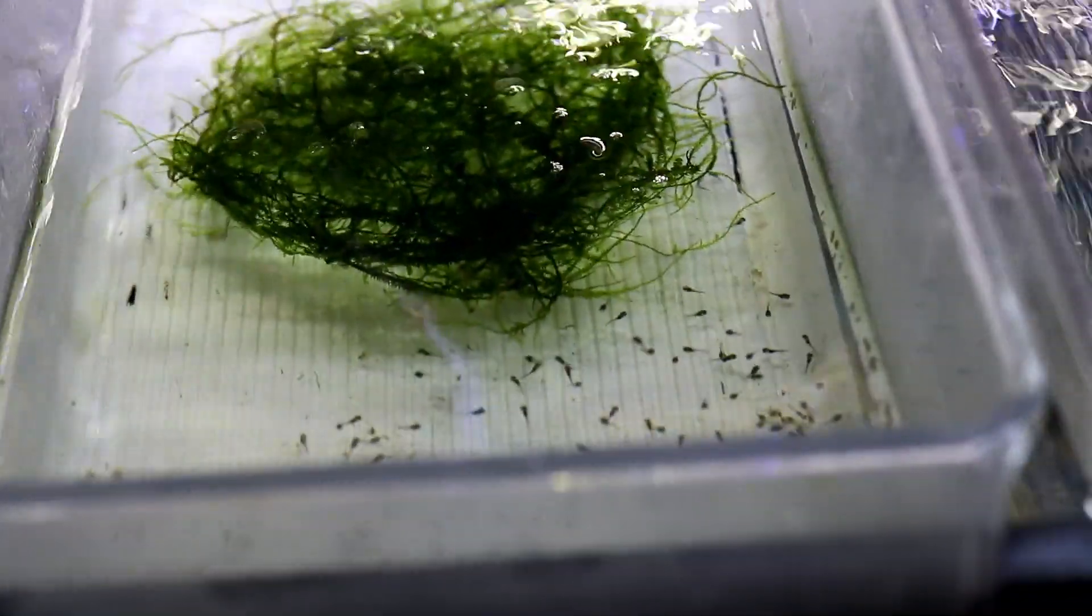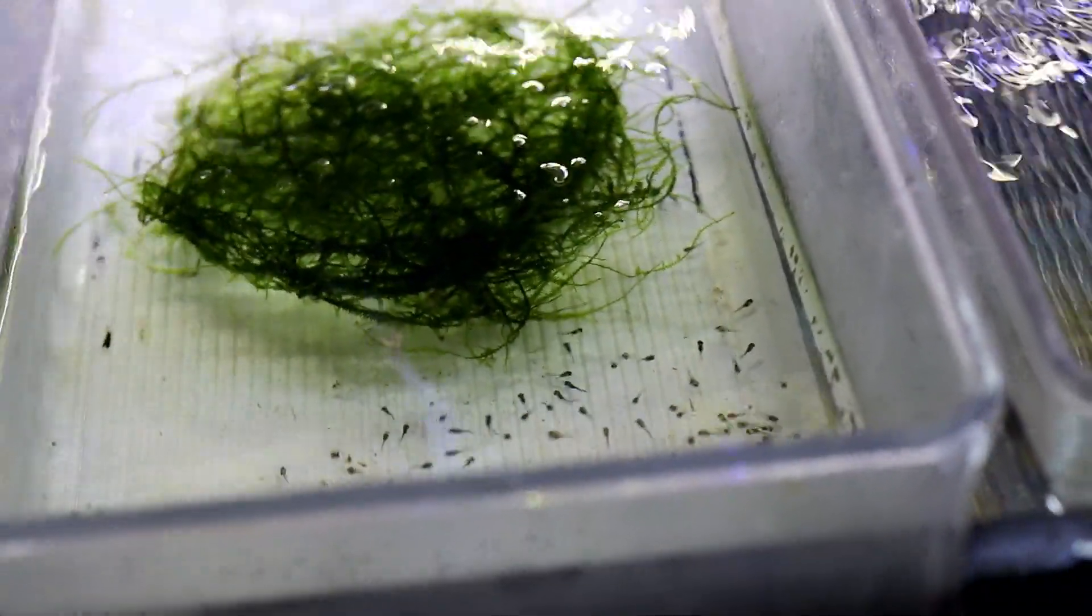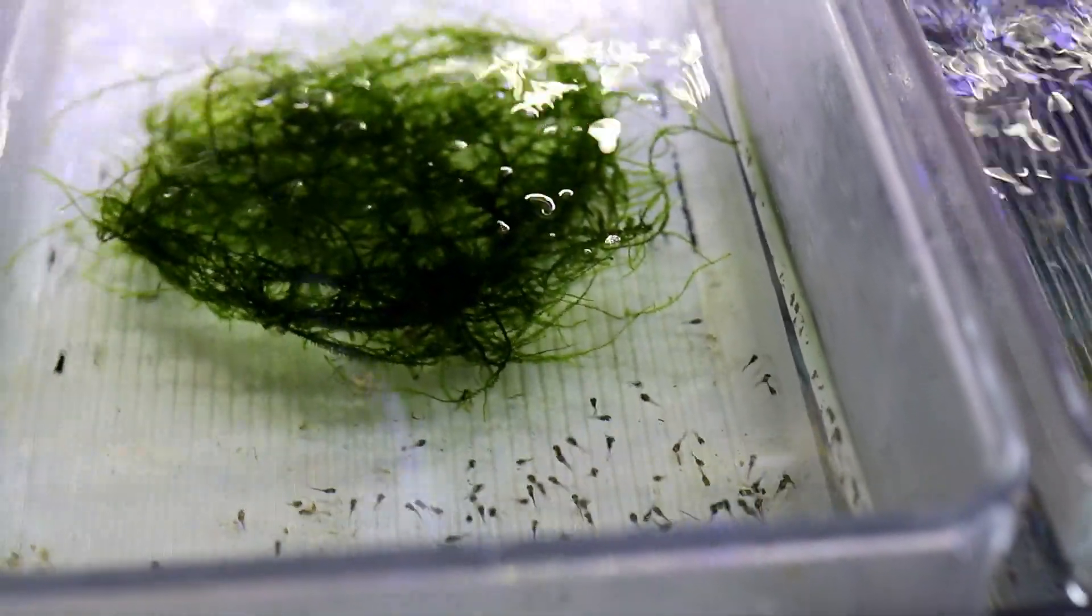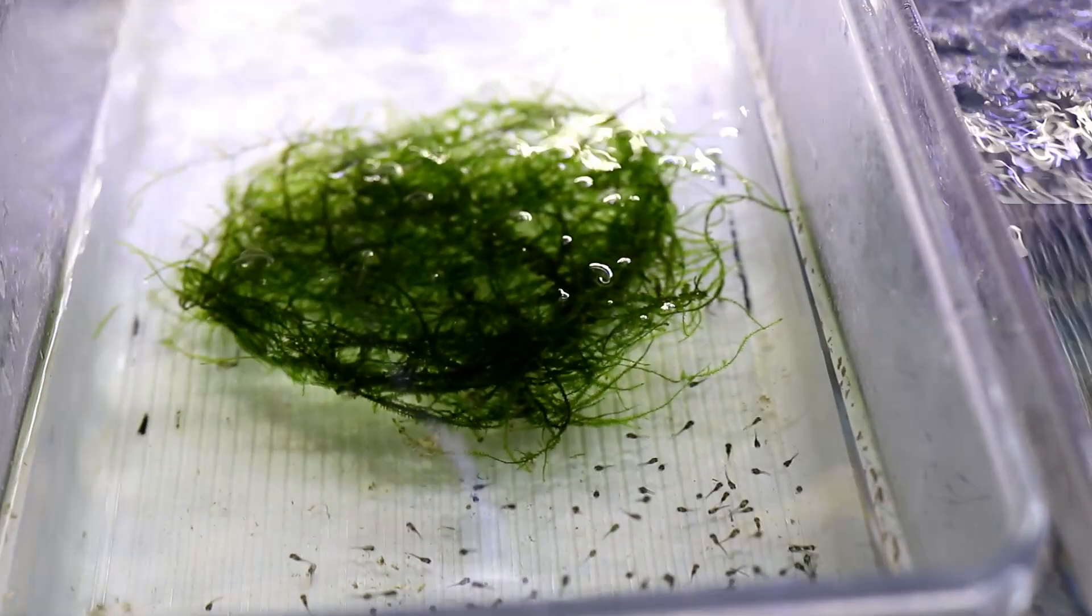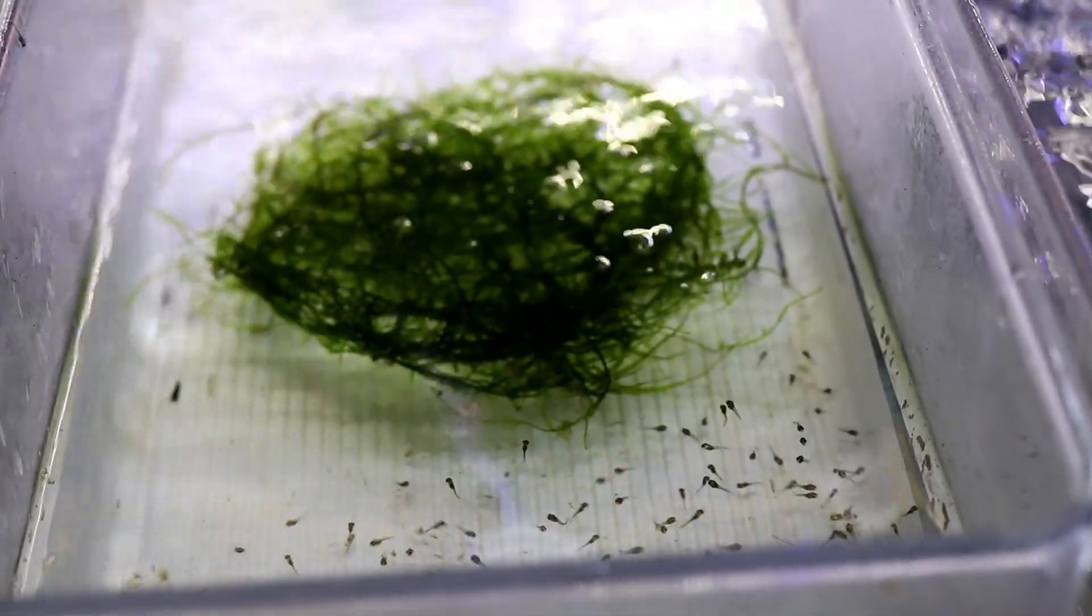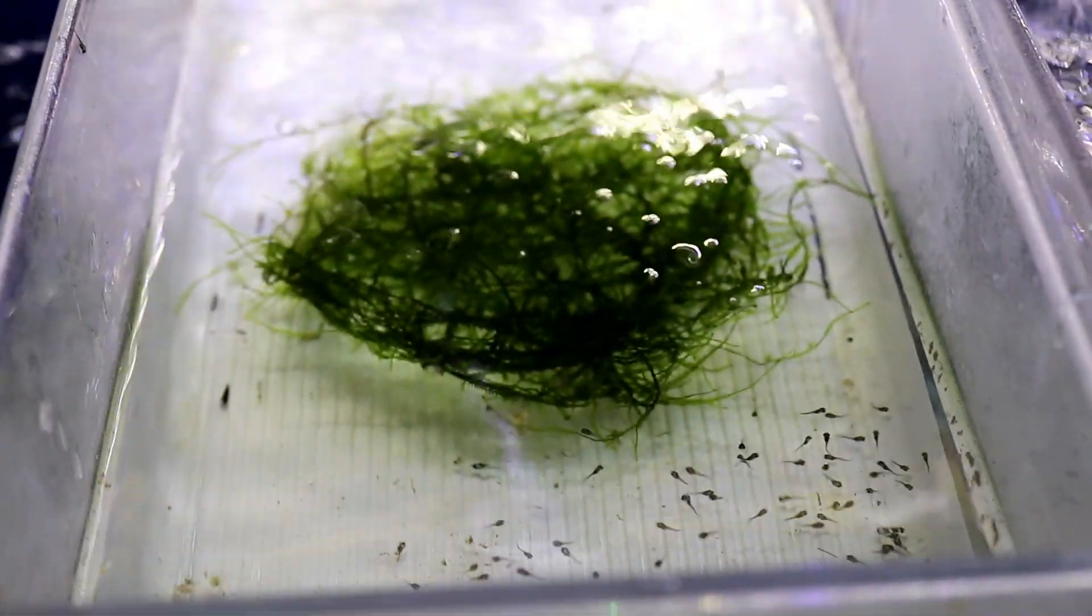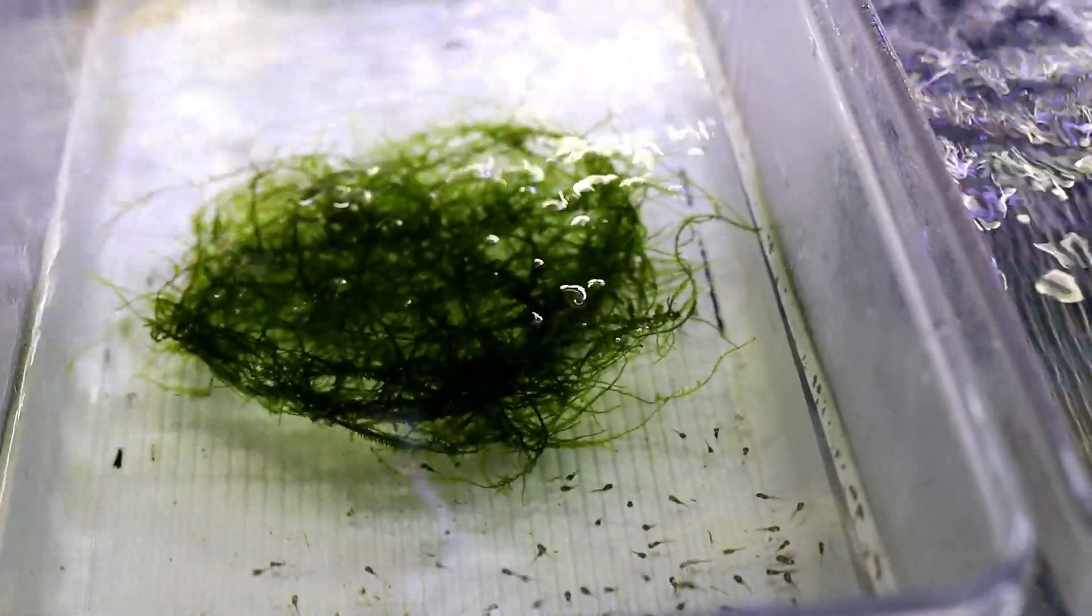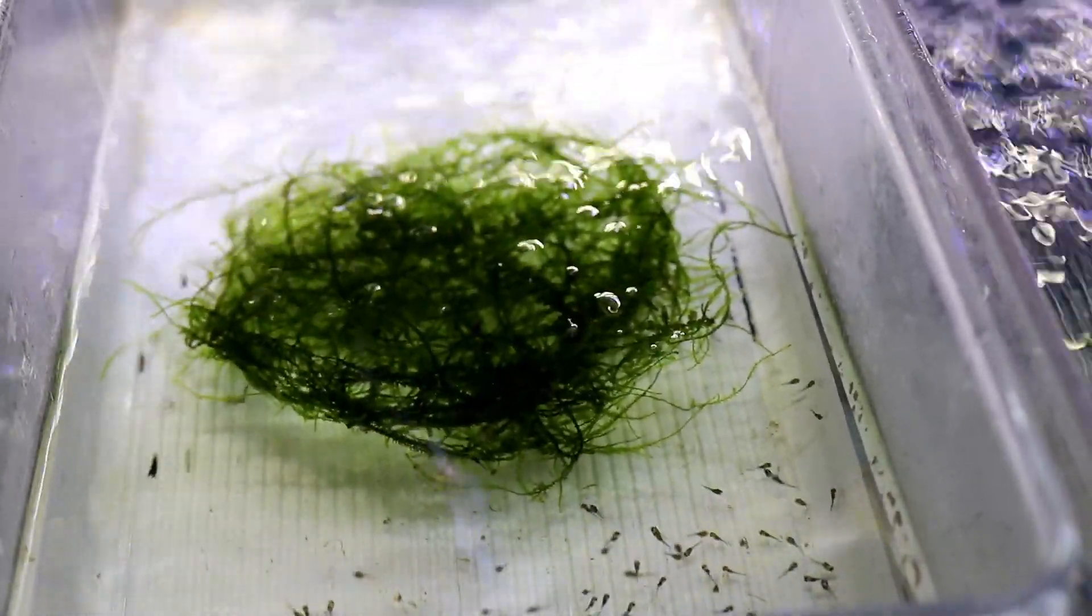So if we look here in the first tray, these are some angelfish fry. I started writing the dates down on them too. This was, these actually hatched, that's not the day the eggs are laid, it's the day that they were hatched. These hatched on November 13th, so these guys are about three days old.